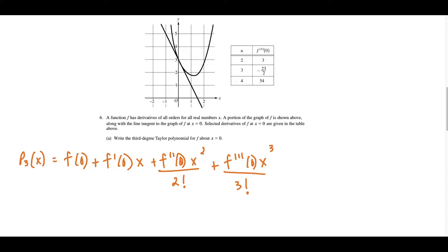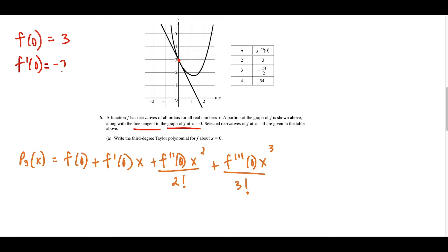From here we need to solve for the values of f, f prime, f double prime, and f triple prime. The first two values we get right from the graph. f(0) is just the y-value when x equals 0, and that y-value is 3. f prime of 0 we find using the tangent line at x equals 0 — the slope is negative 2, going down two units for every one unit to the right.